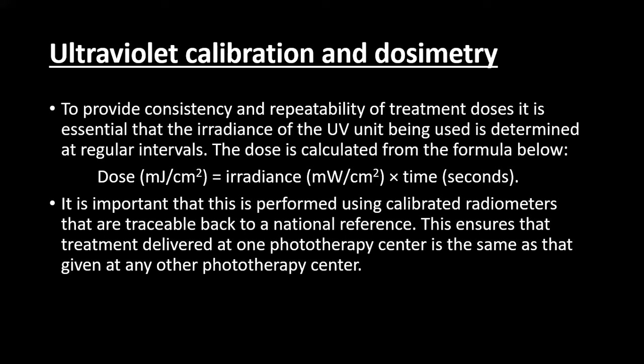For phototherapy units, calibration and dosimetry are essential to provide consistency and repeatability of the treatment dose. The irradiance of a UV unit must be determined at regular intervals. The dose emitted from an ultraviolet unit is in millijoules per centimeter squared, which is irradiance (in milliwatts per centimeter squared) multiplied by time in seconds.